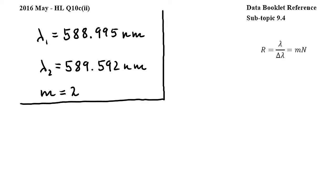In this question we have to find the minimum number of slits in a diffraction grating that would resolve the two wavelengths given in the question.